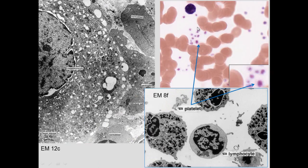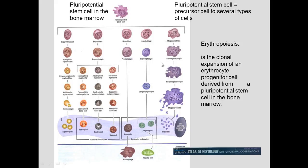Platelets are numerous and can vary in size. They come from megakaryocytes, which are located in the bone marrow. Megakaryocytes have vacuoles that allow small pieces of cytoplasm to pinch off and become platelets. Hematopoiesis begins with a pluripotent stem cell that gives rise to various lineages: red blood cells, eosinophils, neutrophils, basophils, monocytes, and macrophages.